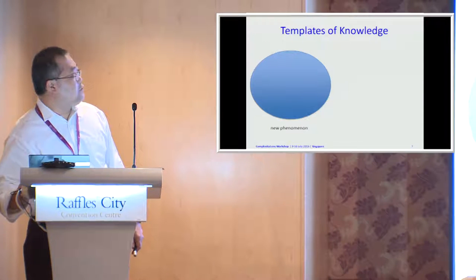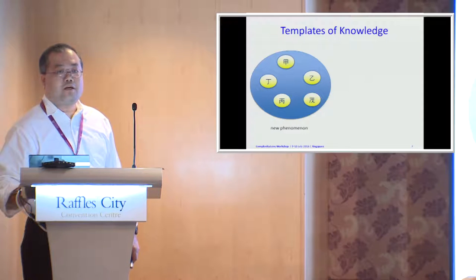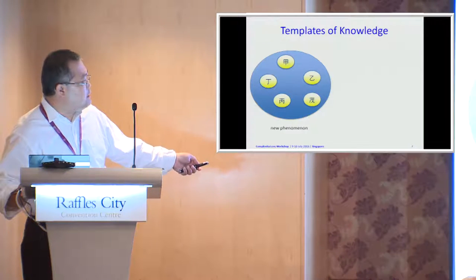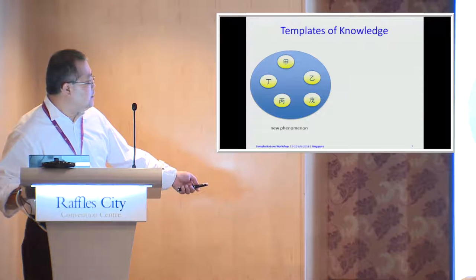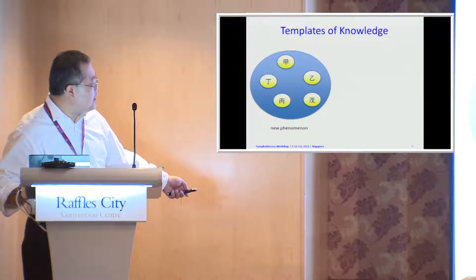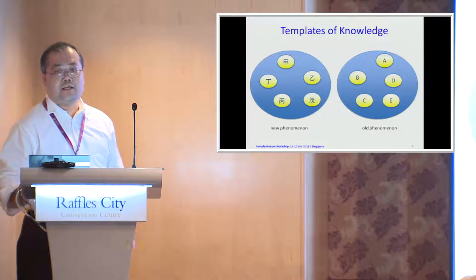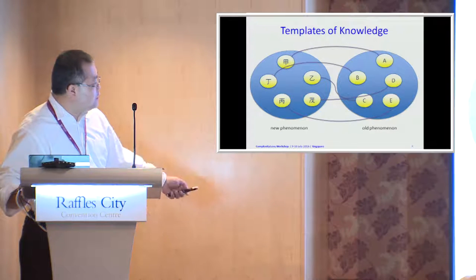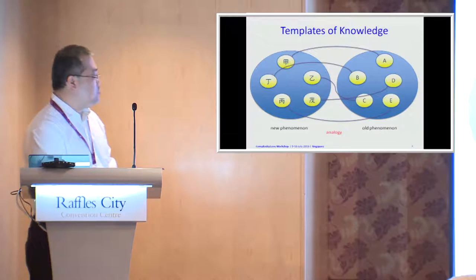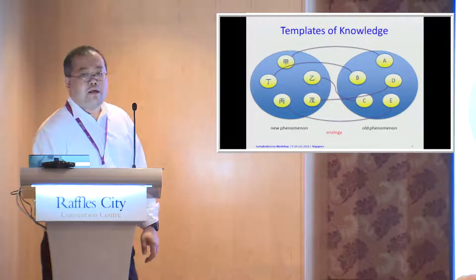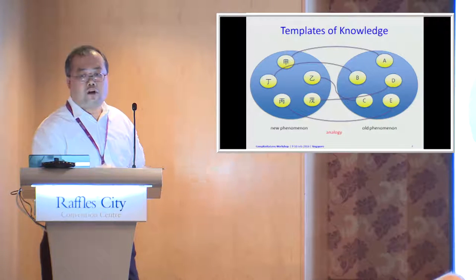Let me explain how these templates work. Suppose I am observing a new phenomenon — here are some observations, which I'll represent as Chinese characters equivalent to A, B, C, D, E. We also have an old phenomenon, the real A, B, C, D, E. We can try to draw analogies between the old and new phenomena. The analogies are not entirely correct, but they just have to be a little useful for us to comprehend the new phenomenon in terms of old phenomenon that we already understand.